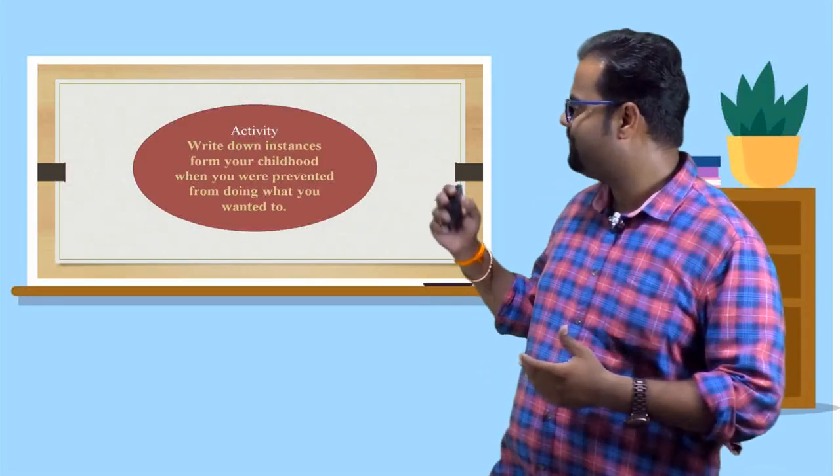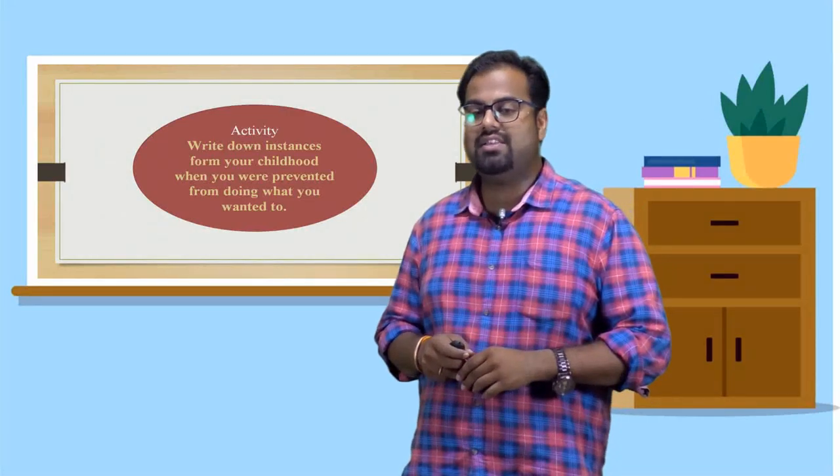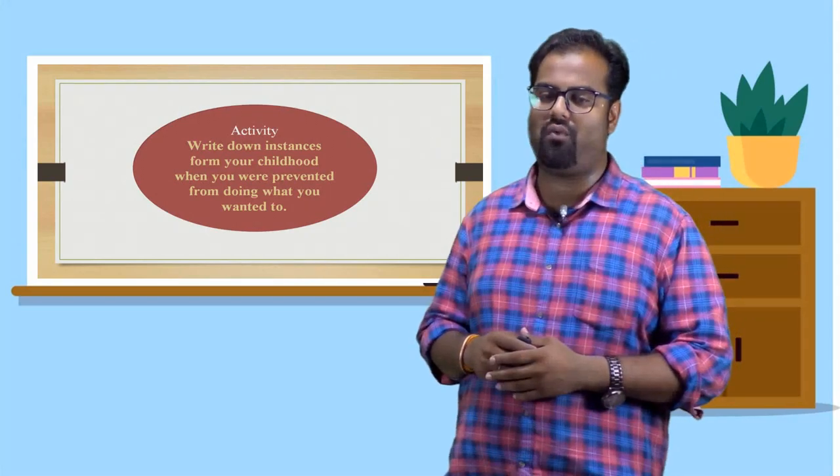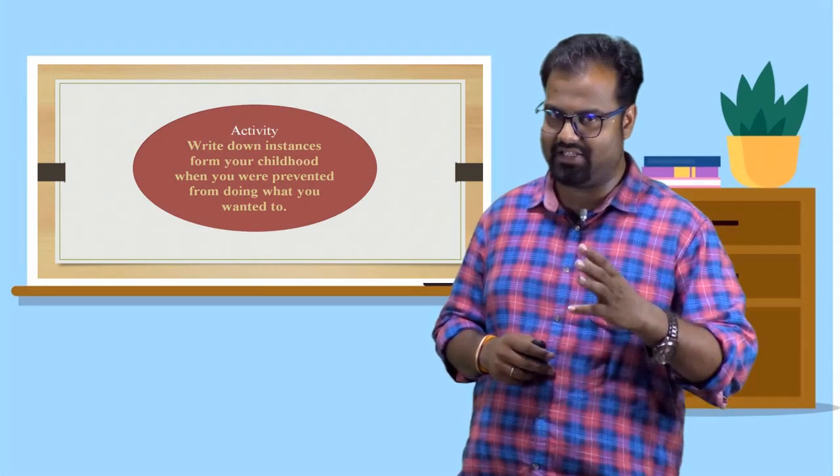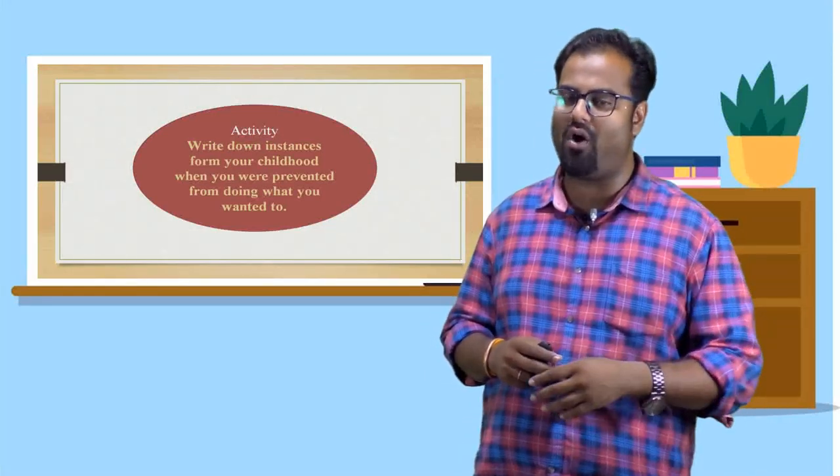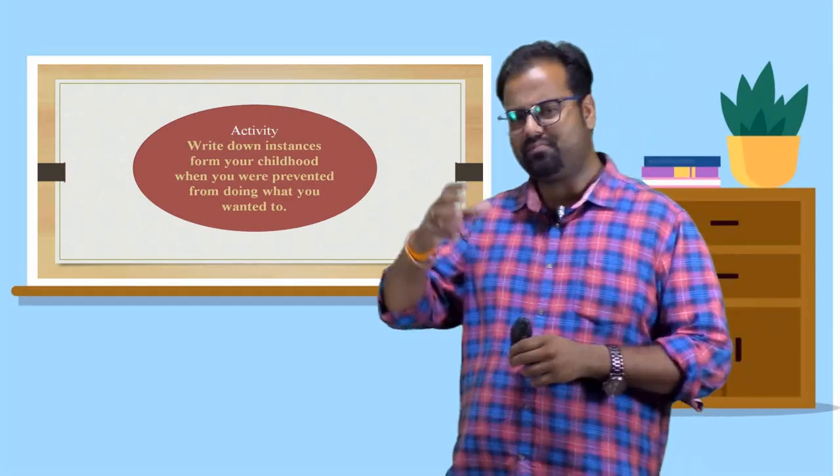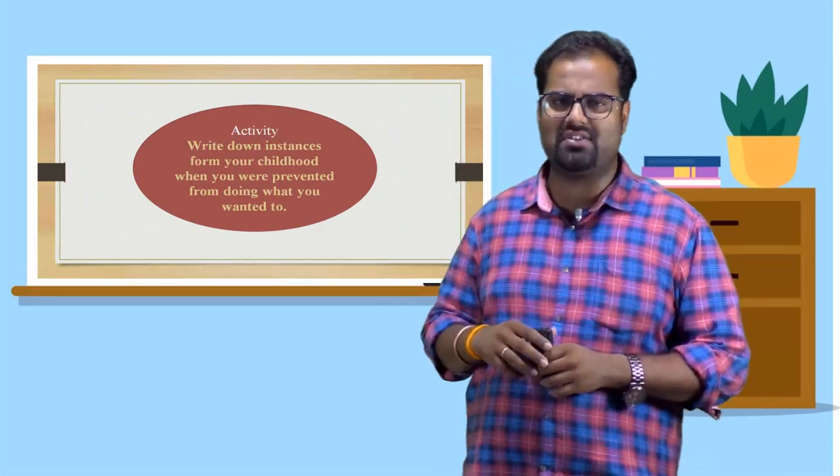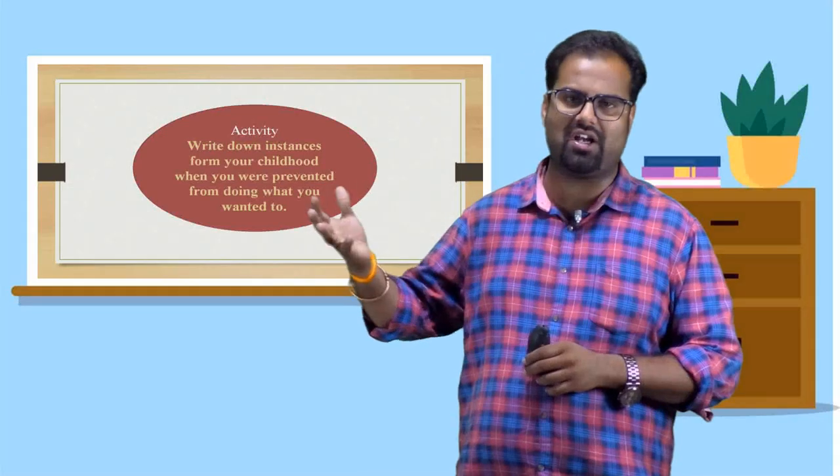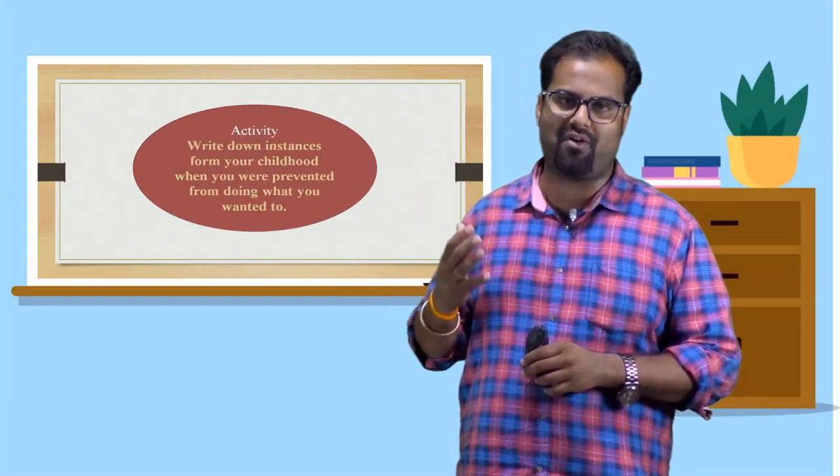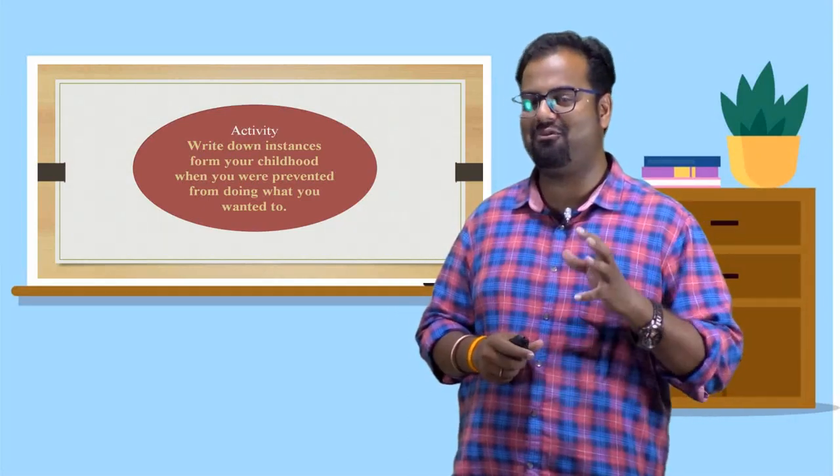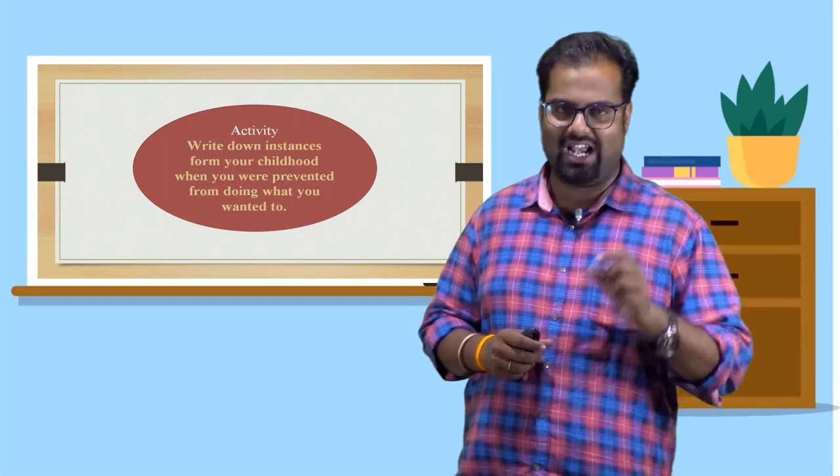Write down instances from your childhood when your mother, when you are prevented from doing what you wanted to do. So, what is an activity? Write down instances from your childhood when you are prevented from doing what you wanted to do. This means some experiences, some memories you have to write down. You wanted to do something. You wanted to go to your village fair. You wanted to go to your movie. You wanted to go to your watch a cricket match. But you are not allowed from your parents. Write that down. And also write your quarrels with your mother and father. And also tell some interesting episodes. Write down your notebook.